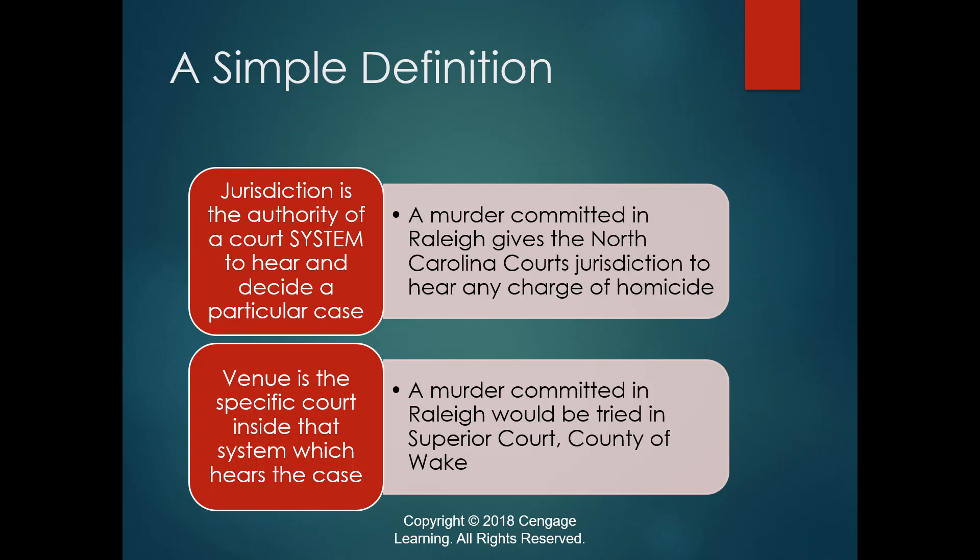For criminal law, if you committed a murder in Raleigh, North Carolina, the system with jurisdiction is the North Carolina courts. If you committed it in Charleston, South Carolina, then South Carolina would have jurisdiction. Notice I didn't say that if you killed a citizen of North Carolina in Montana, North Carolina would have jurisdiction — because generally, jurisdiction under criminal law is based on geography: the physical location where the crime occurs.